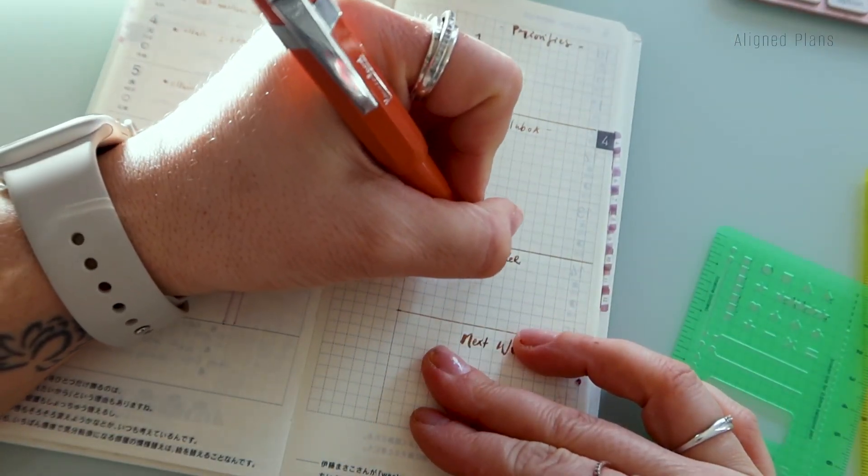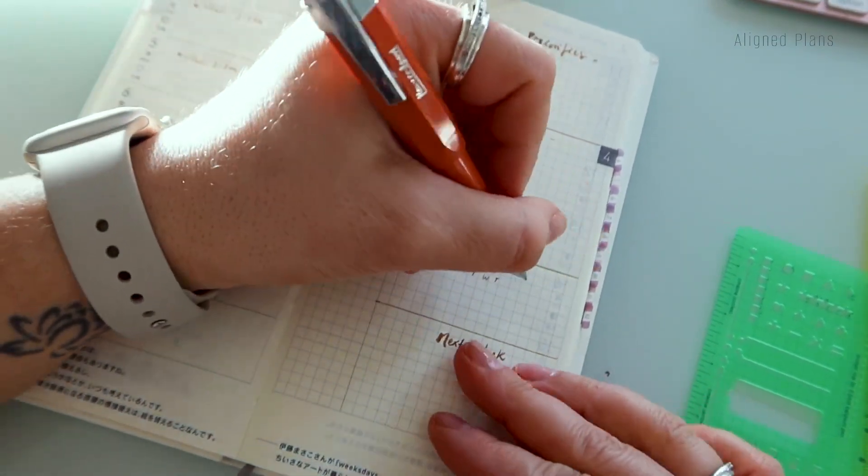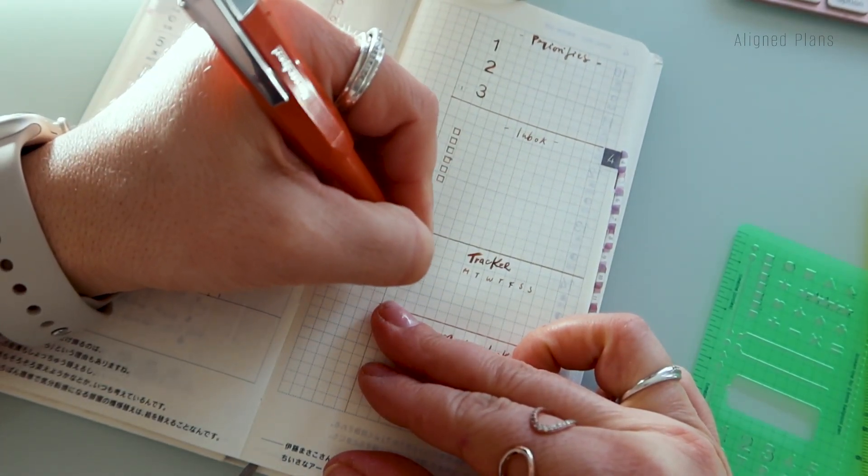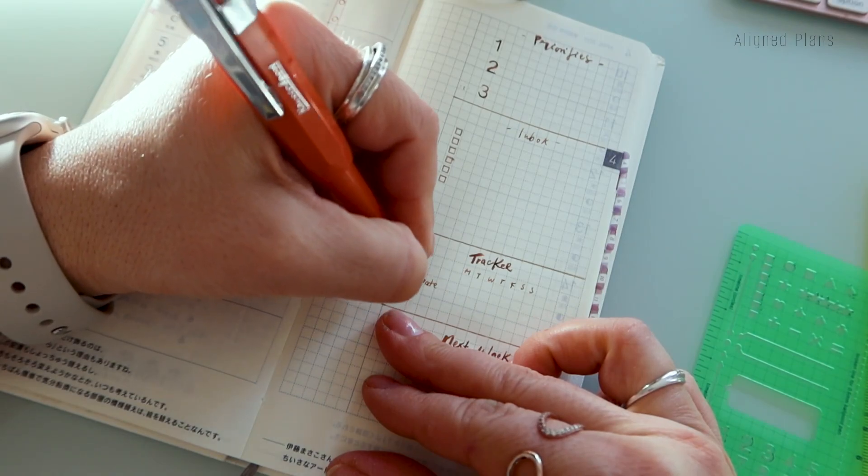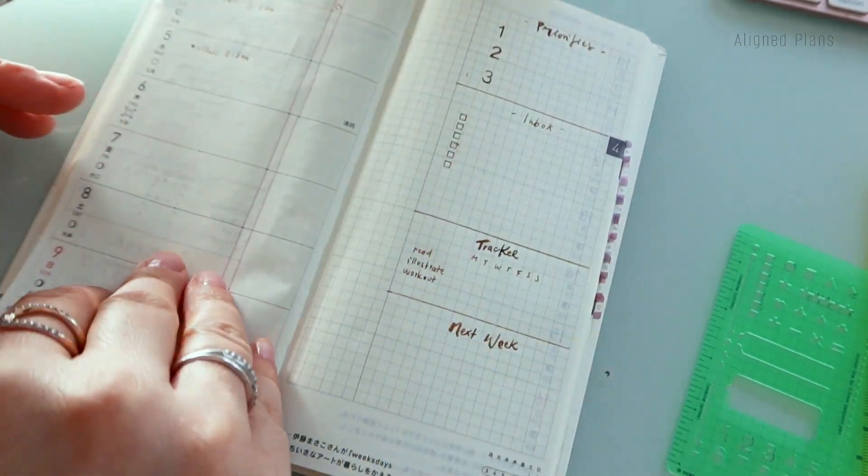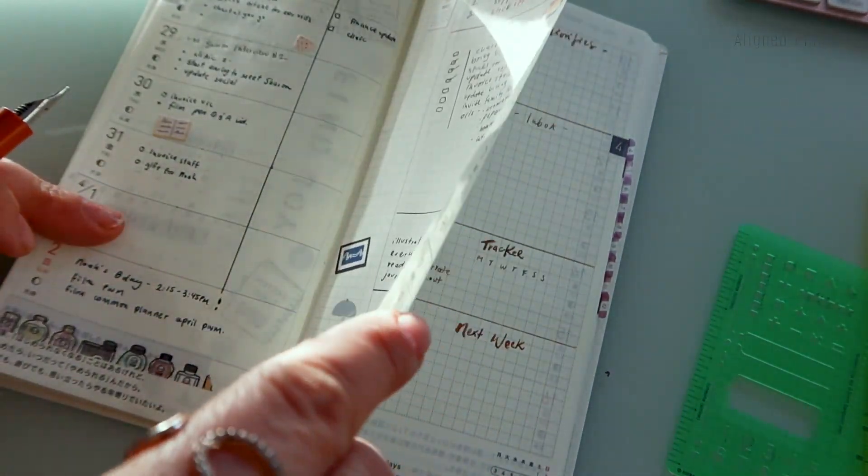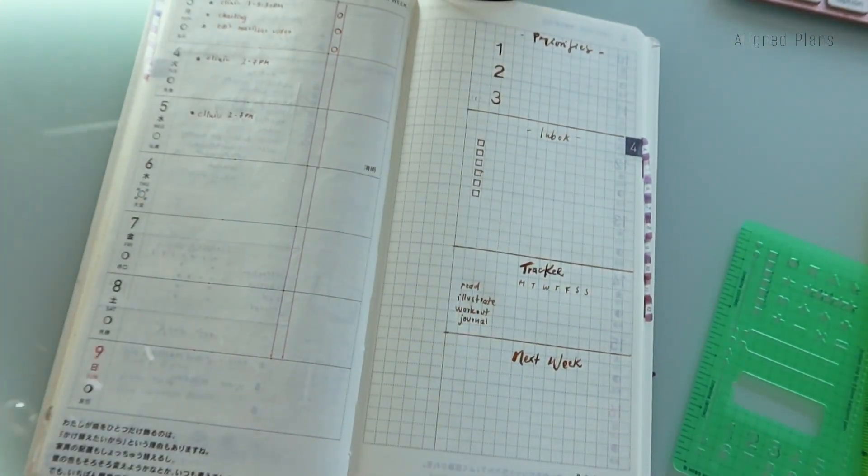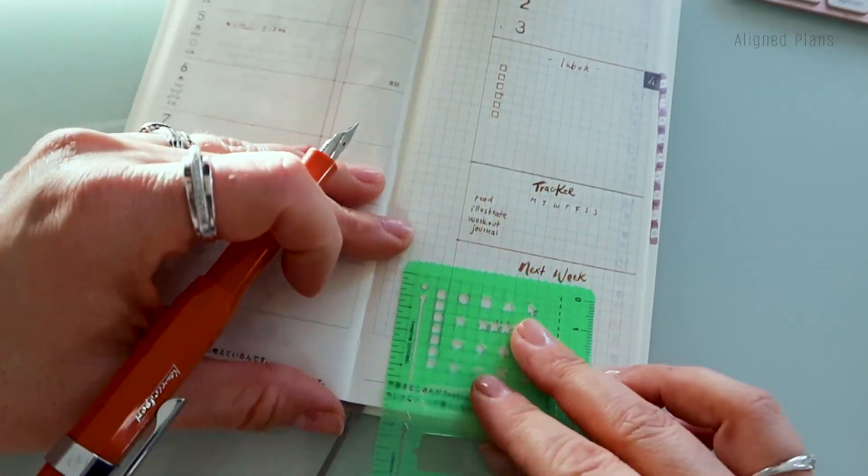Now for trackers, I'm kind of keeping it pretty consistent. I've been tracking reading, illustration, working out, and journaling. I have to be honest, I haven't really been able to keep up with illustrations as much. Journaling I have shifted to the morning.